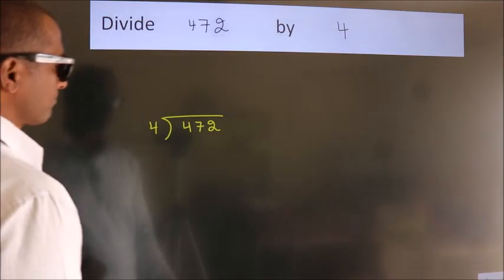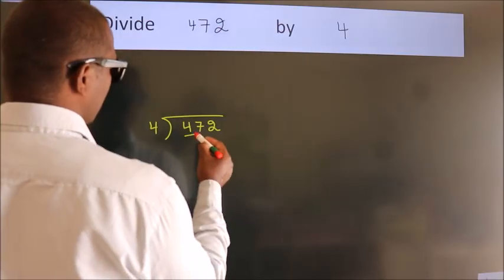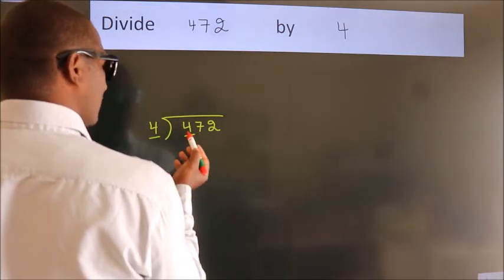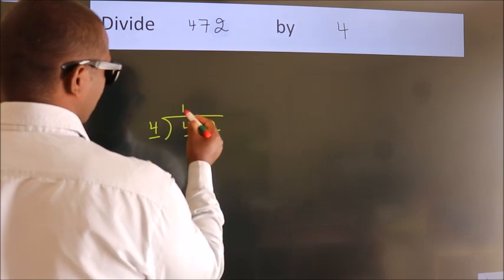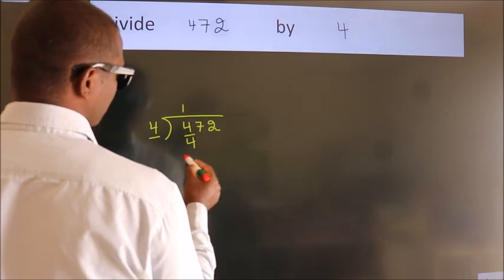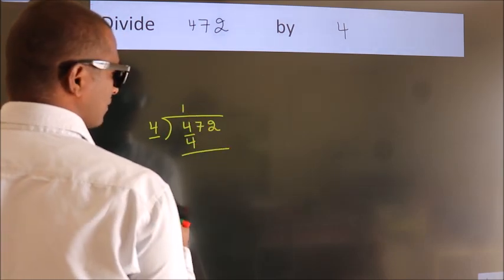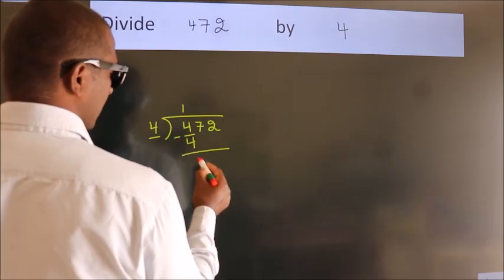Next. Here we have 4. Here 4. When do we get 4? In 4 table. 4 once, 4. Now we should subtract. We get 0.